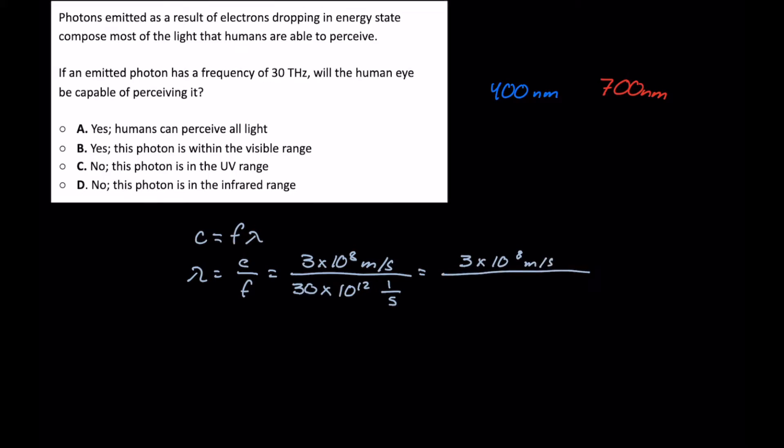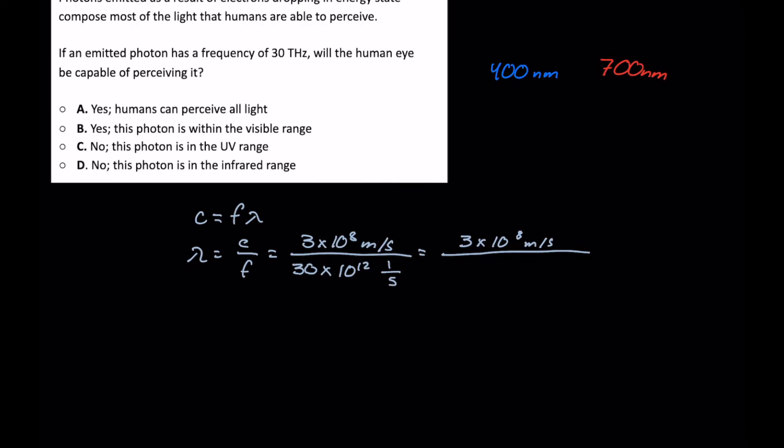And then multiply 10 to the 10 to the 12th component. That way we get 3 times 10 to the 13th, 1 over second.